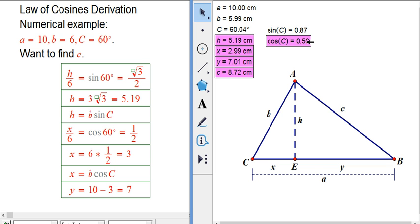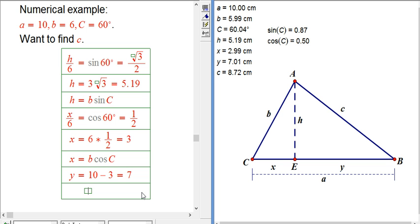So what's the general formula? y equals, and here it gets a little more complicated. I take a, and I subtract off that b cosine c. I'm almost done.